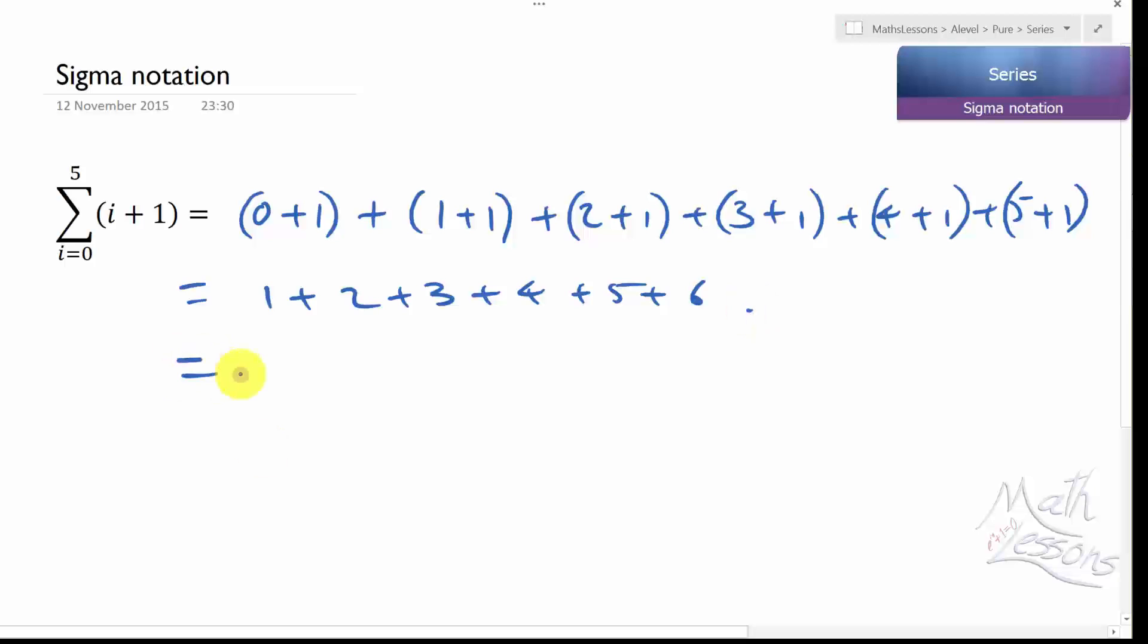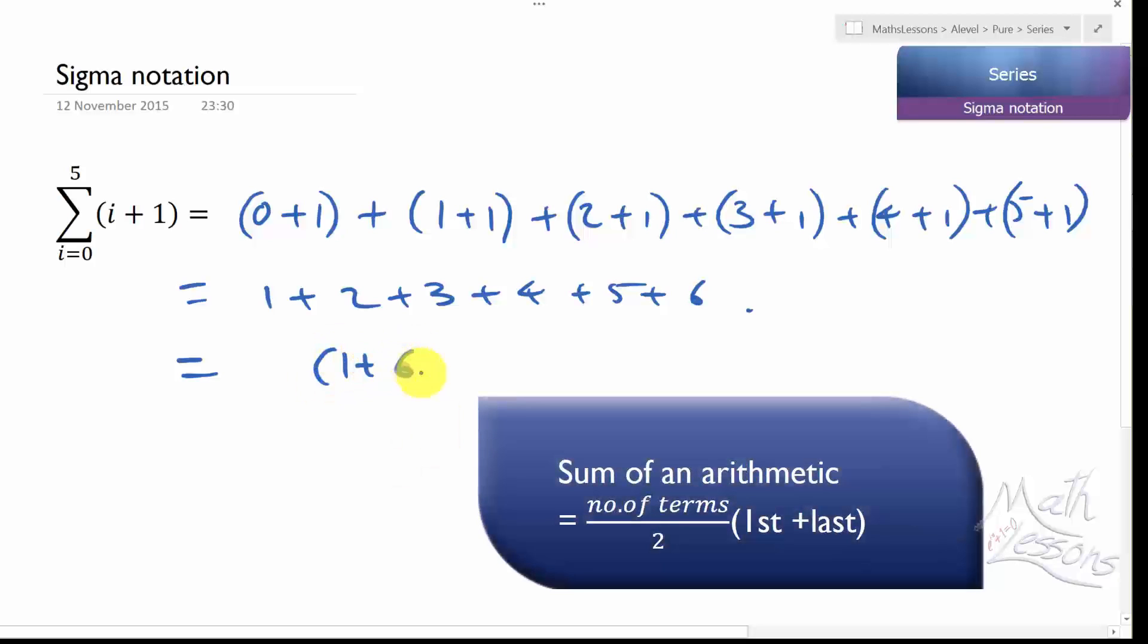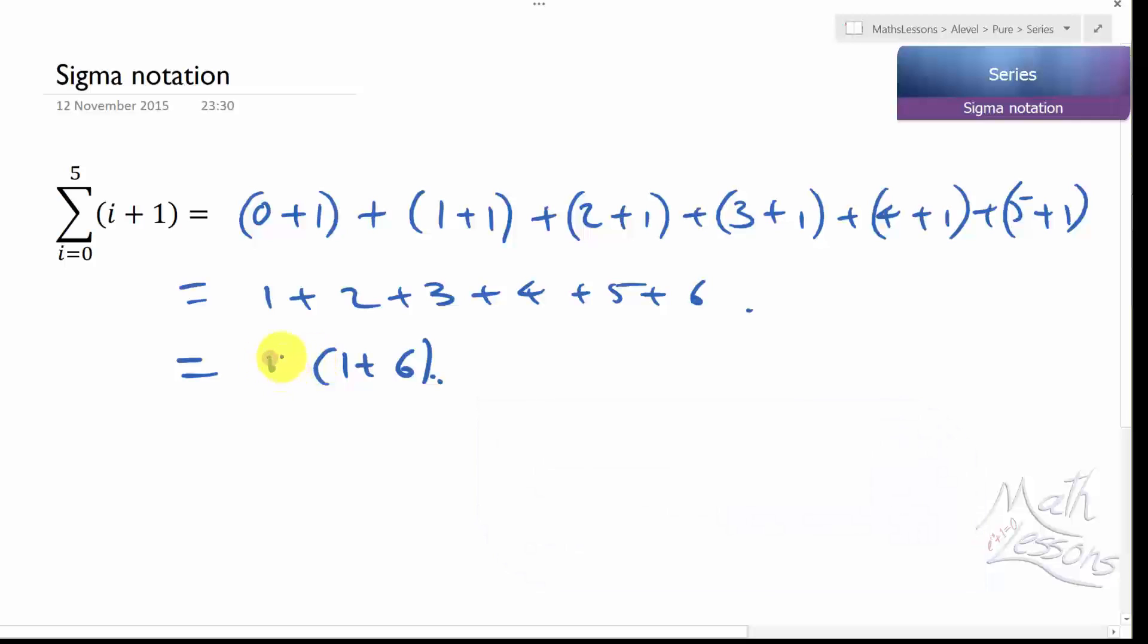And if you know your formula, the sum of an arithmetic, you can realize if you add the first and the last term, which is 1 plus 6, and you add up the number of terms divided by 2, which is 6. Then you get the sum for those terms. That's going to be 3 times 7, which is 21.